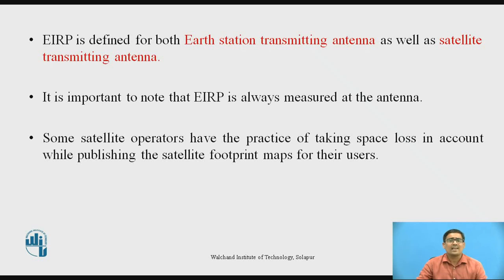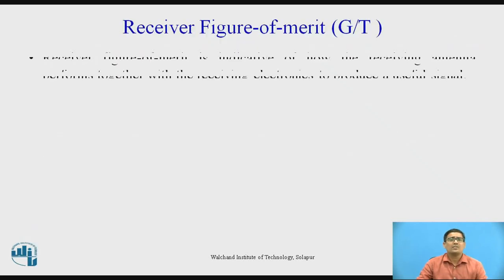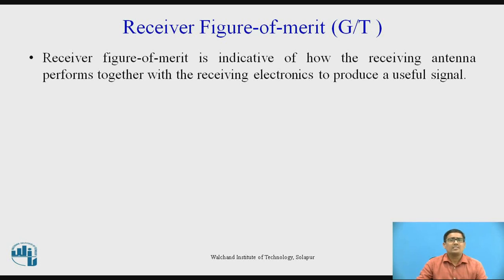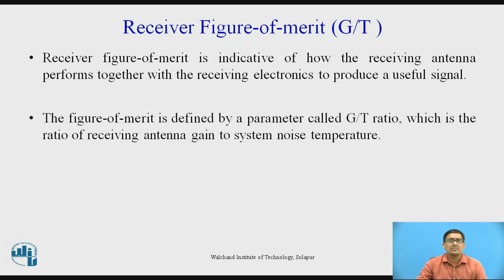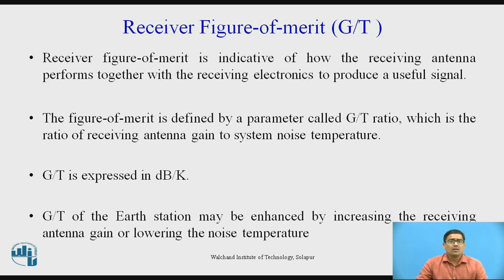Now we want to see the receiver figure of merit, that is the G/T ratio. The receiver figure of merit is indicative of how the receiving antenna performs together with the receiving electronics to produce a useful signal. The figure of merit is defined as the G/T ratio, which is the ratio of receiving antenna gain to the system noise temperature. G/T is expressed in dB per Kelvin. The G/T ratio of the Earth Station may be enhanced by increasing the receiving antenna gain and lowering the noise temperature.